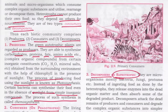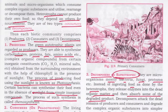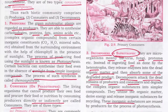Decomposers, also called saprotrophs, are microorganisms — mostly bacteria, fungi, and protozoa. Instead of ingesting food as heterotrophs do, they depend on dead organic matter and absorb degraded products. Decomposers attack the dead remains of producers and consumers and degrade complex organic substances into simpler compounds. These inorganic substances are then reused by producers for the process of photosynthesis.